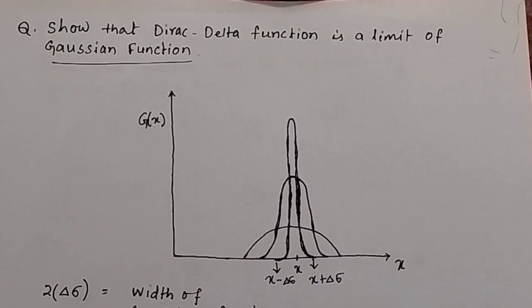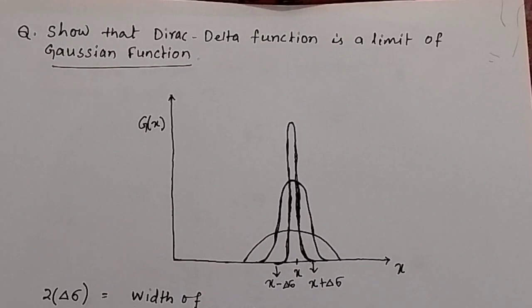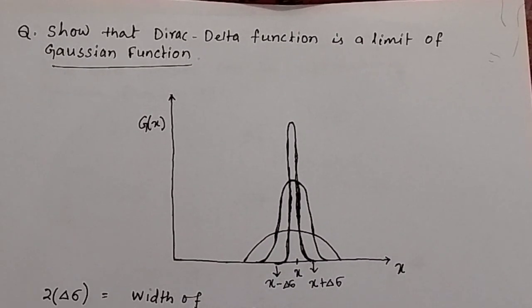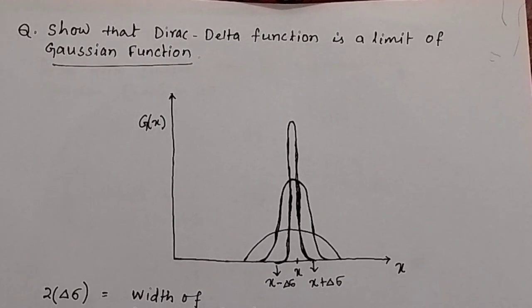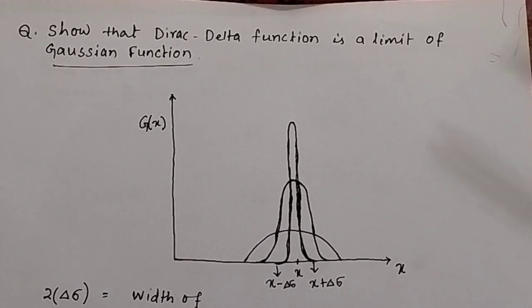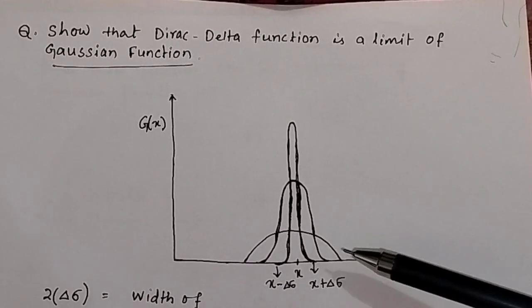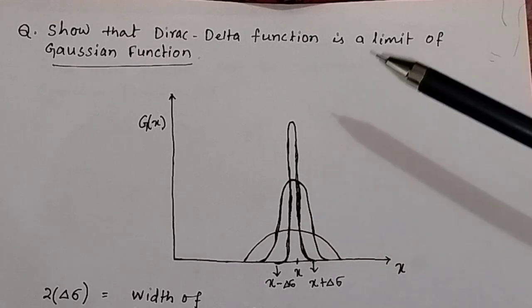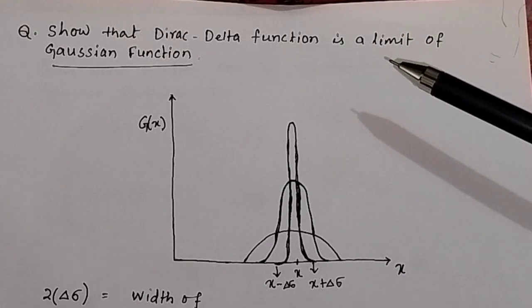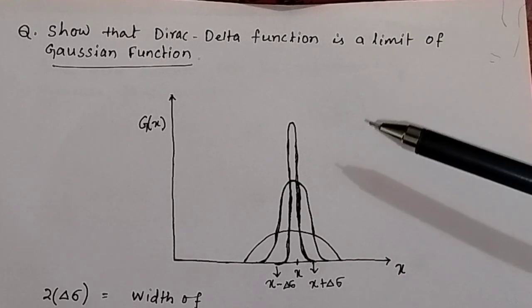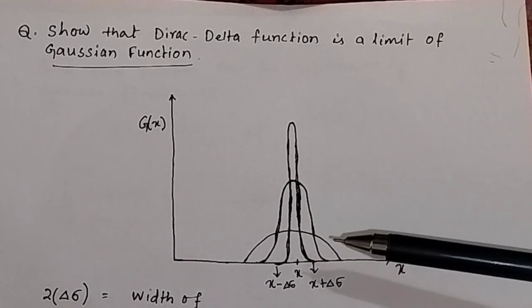The Dirac delta function is a limit of a Gaussian function. We can treat the limit of a Gaussian function as a Dirac delta function.